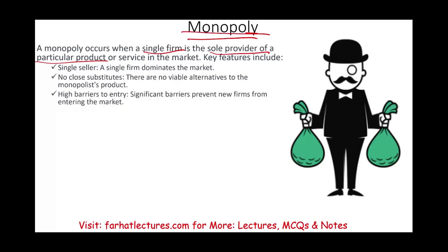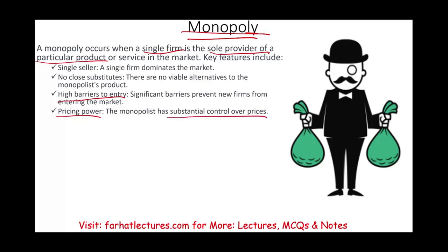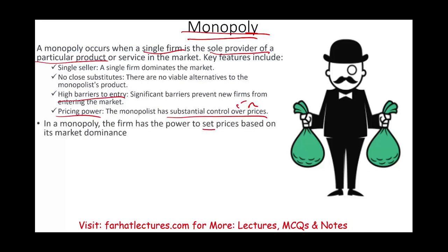There are high barriers to entry in a monopoly. You cannot just start a utility company in that area because you need large capital expenditure — billions and billions of dollars — government approval, and many different licenses. So there's a high barrier to entry that prevents new firms from entering. In a monopoly, you have pricing power — you don't care about market share because you have the whole market. You can set the prices that you want, but you don't want to set them too high where you upset the citizens or the government. You have substantial control over prices. You are a price setter, not a price taker.